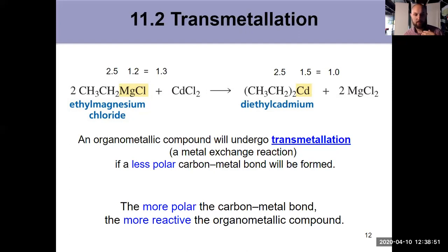The more it wants to form something that's more stable, because carbon wants to preferentially bond to something closer to itself in electronegativity. I go from carbon with electronegativity 2.5, magnesium 1.2 - well, cadmium is a little bit closer at 1.5, so I can swap magnesium for cadmium by reacting with cadmium chloride. That's a transmetallation reaction, but it only happens if you're forming a less polar carbon-metal bond.